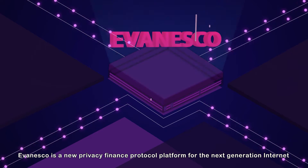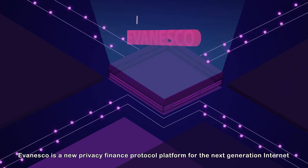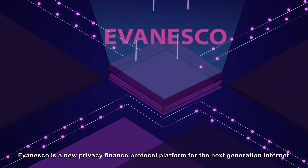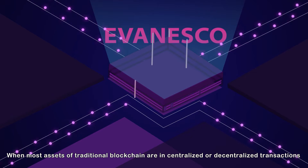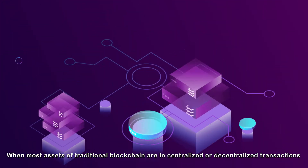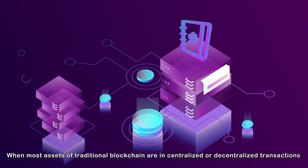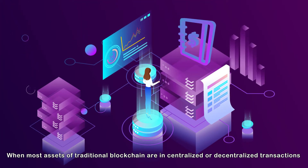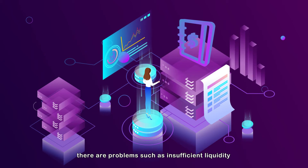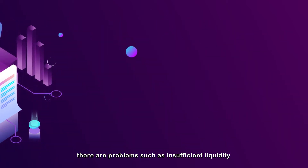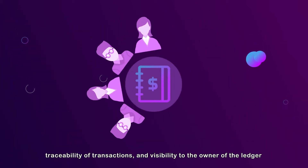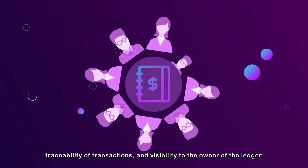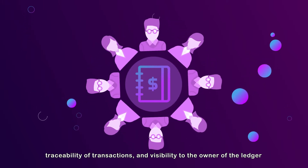Evanesco is a new privacy finance protocol platform for the next-generation Internet. With the shortcomings of traditional blockchain in centralized or decentralized transactions, there are problems such as insufficient liquidity, traceability of transactions, and visibility to the owner of the assets.